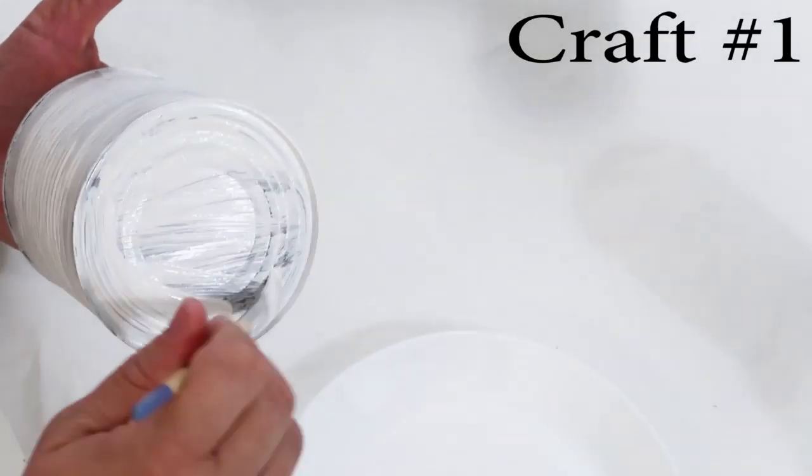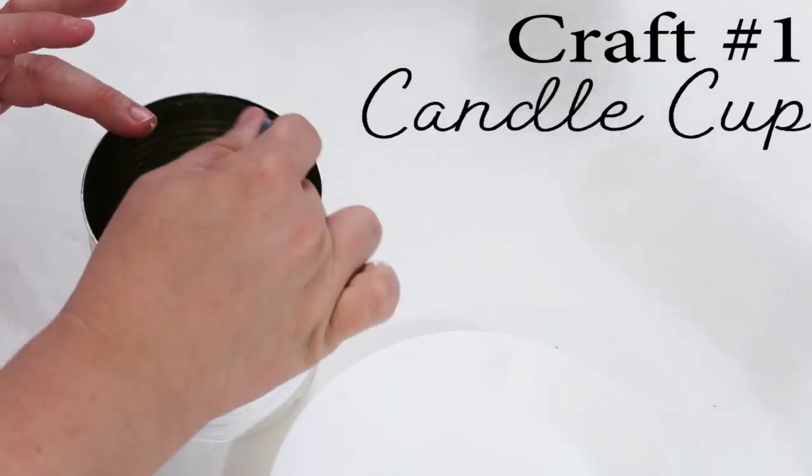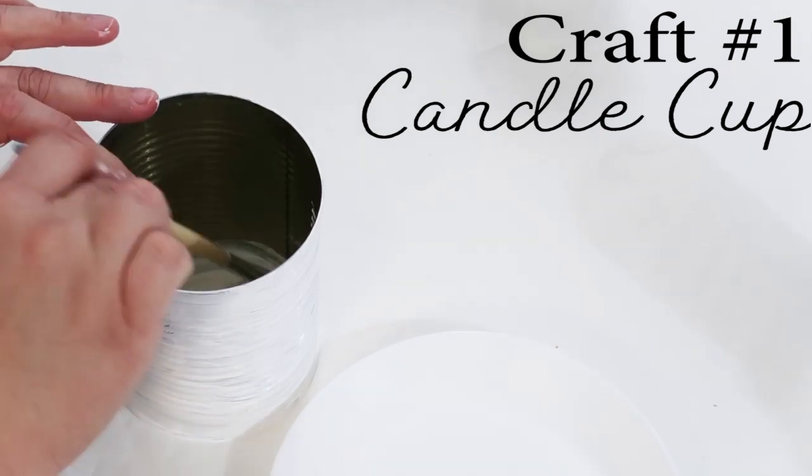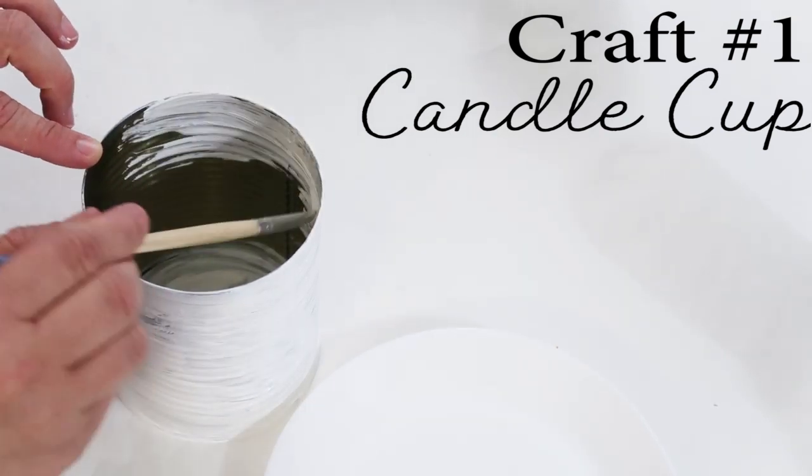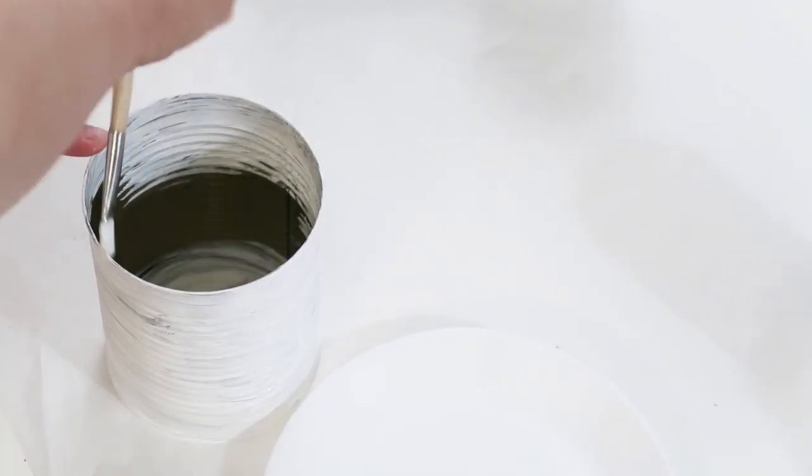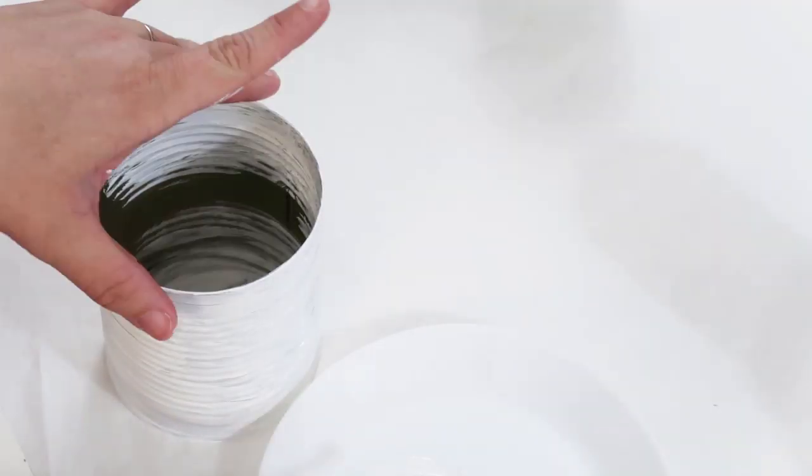To get started for craft number one you're going to need a couple of things: a medium-sized tin can, white paint, orange paint, a wooden candlestick holder, and then some ribbon.